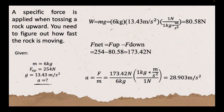To solve for the weight, we have to multiply the mass by the specific gravity mentioned. So, we will have 6 kg which is the mass of the rock and the specific gravity which is 13.43 m per second squared.